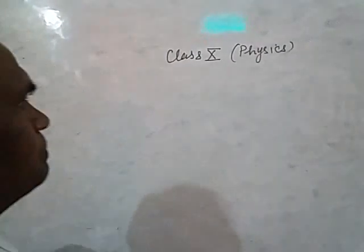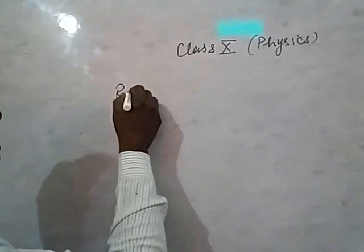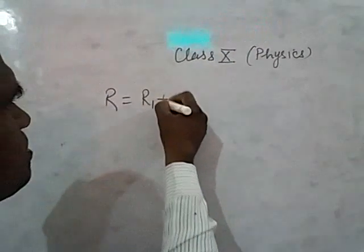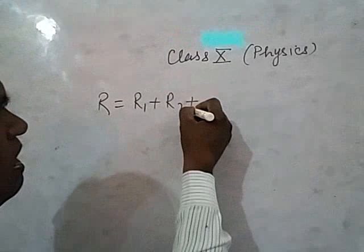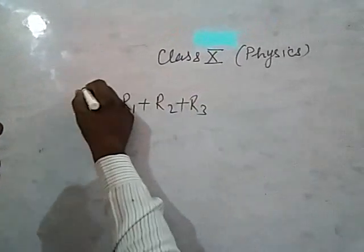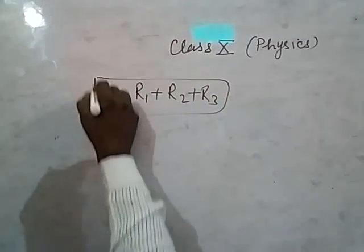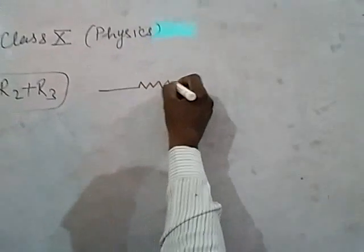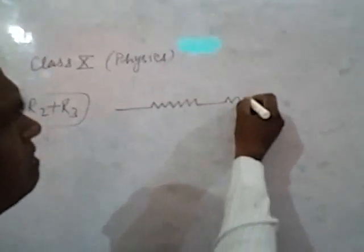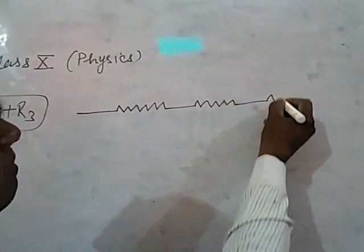You found there R equals R1 plus R2 plus R3, where R1, R2 and R3 are three resistances combined in series with a V-volt battery or V-volt cell.